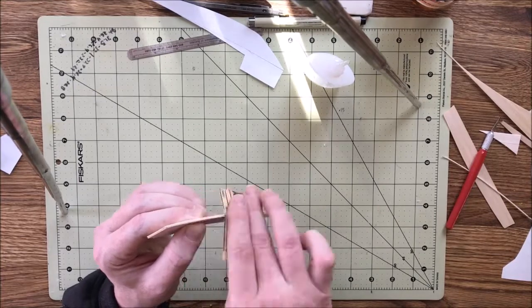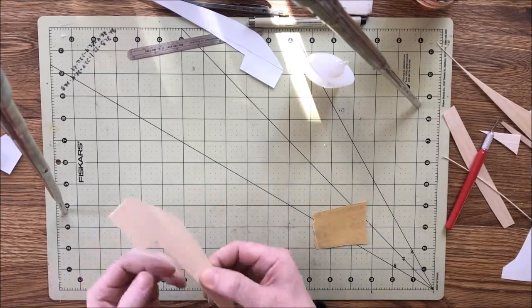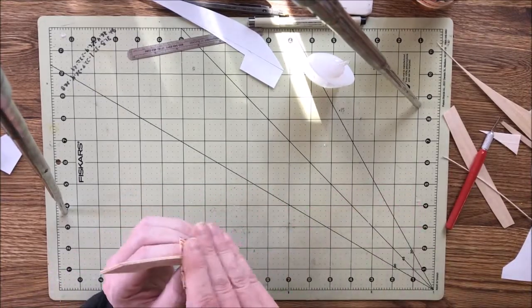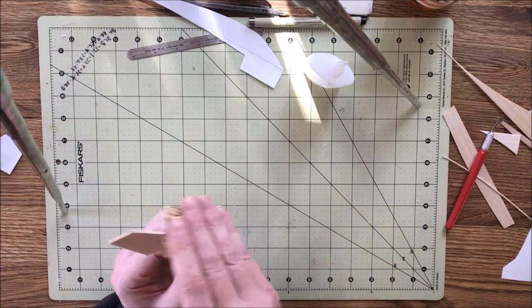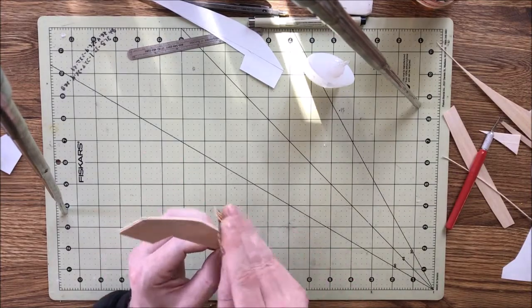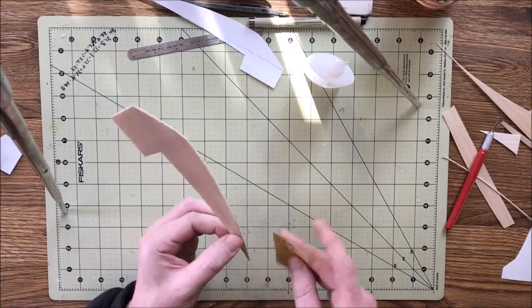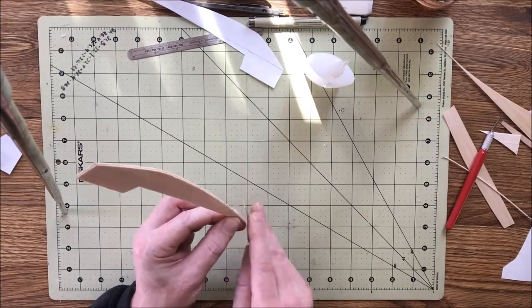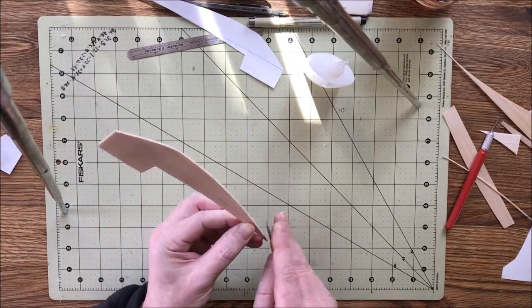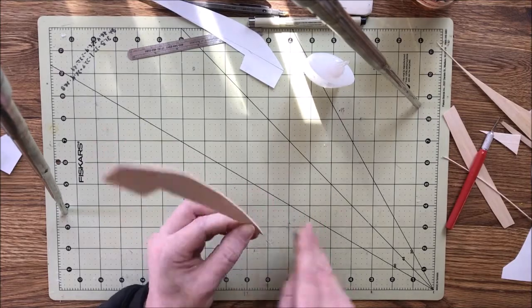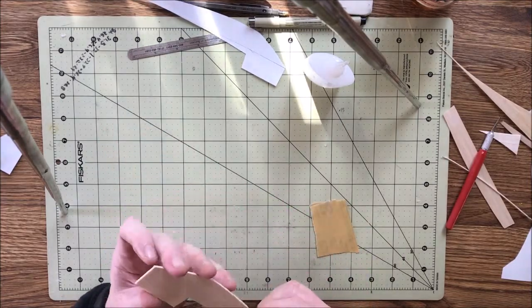Get everything lined up and sanded, everything even. You'll get a pretty crooked plane if you don't get things at least somewhat close. It doesn't take much to sand this stuff. I don't remember what grit this is, but it's pretty light.